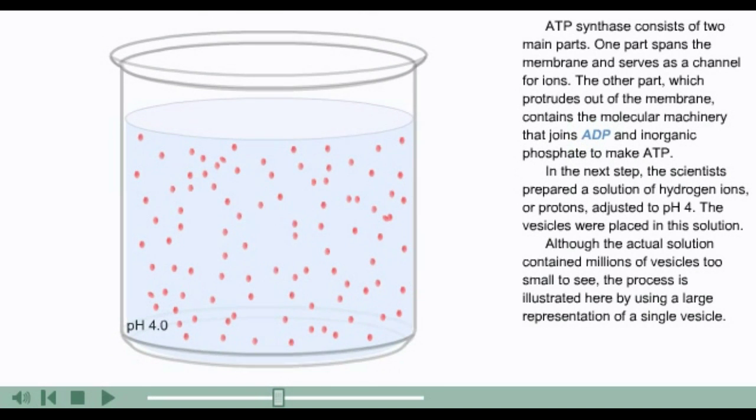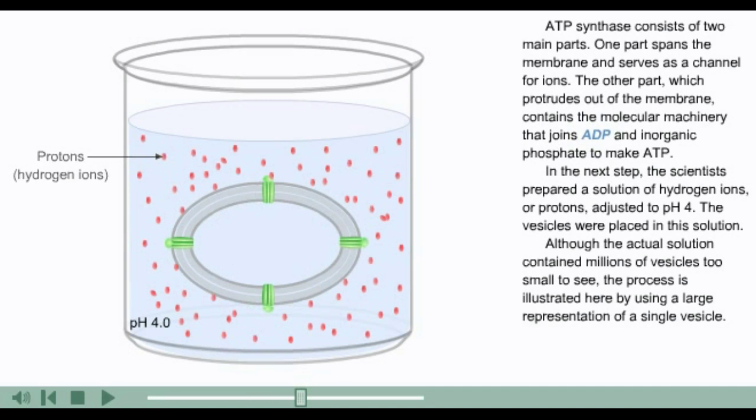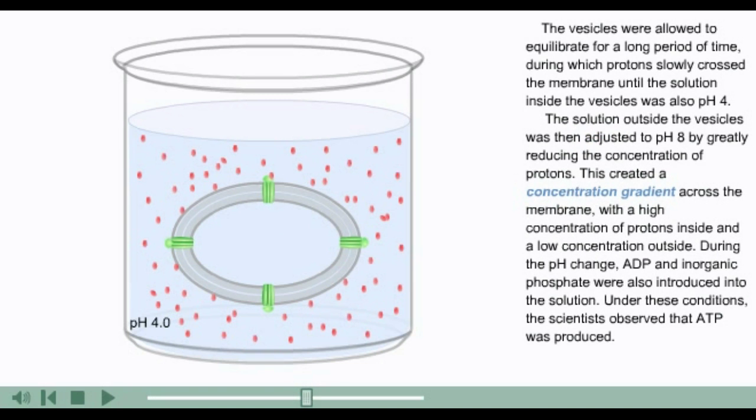In the next step, the scientists prepared a solution of hydrogen ions, or protons, adjusted to pH 4. The vesicles were placed in this solution. Although the actual solution contained millions of vesicles too small to see, the process is illustrated here by using a large representation of a single vesicle. The vesicles were allowed to equilibrate for a long period of time, during which protons slowly crossed the membrane until the solution inside the vesicles was also pH 4.